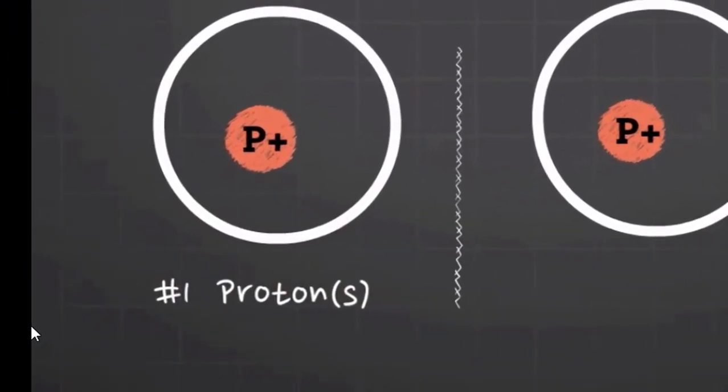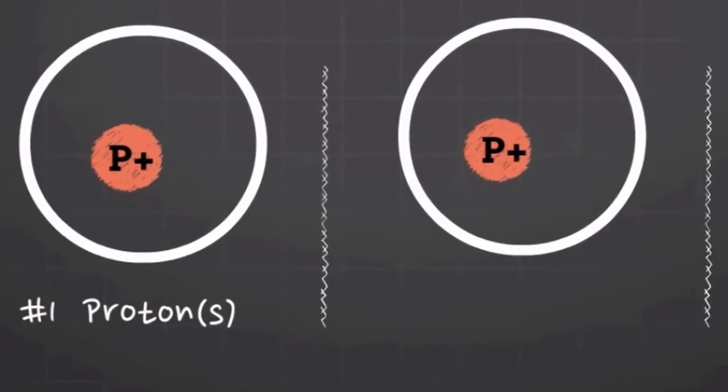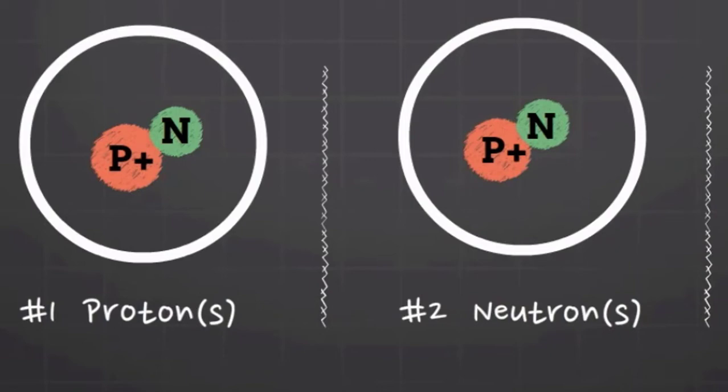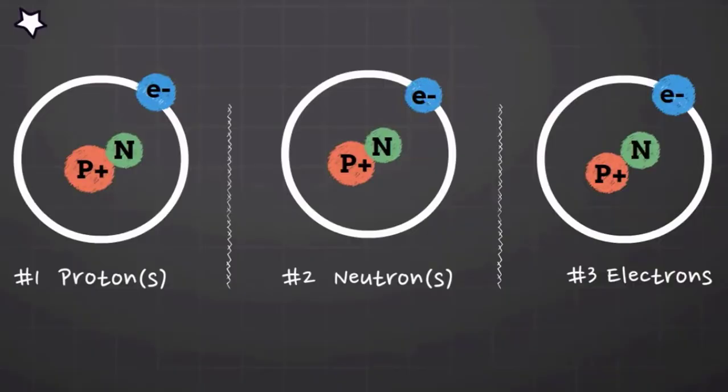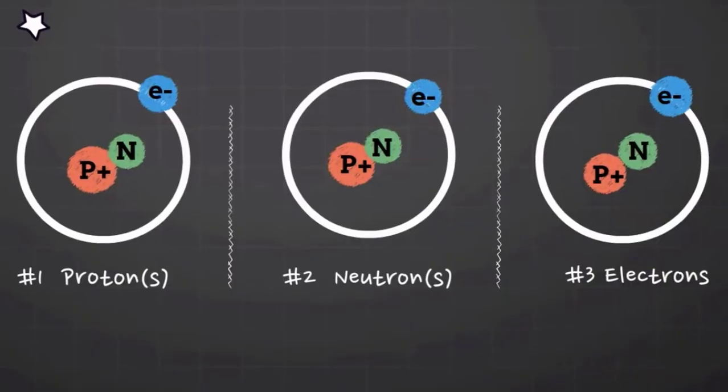Protons lie in the nucleus of the atom. Neutrons join the protons in the nucleus of the atom as well. Electrons orbit the nucleus and lie on the outer regions of the atom.